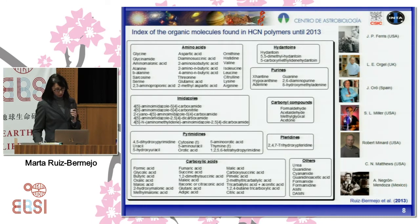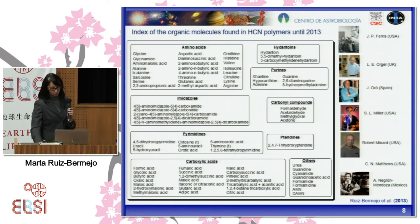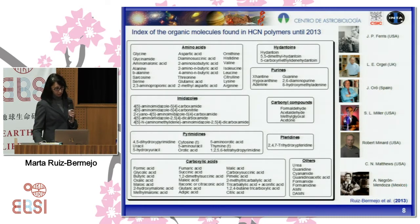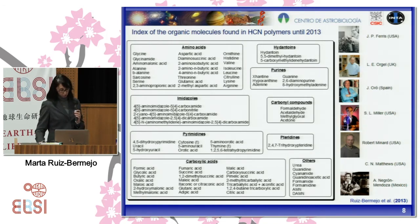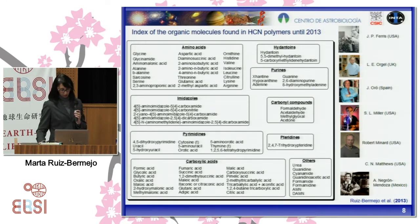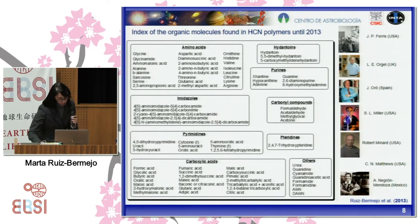Numerous studies over the last 50 years have sought to define the molecules present in hydrogen cyanide polymers. The organics detected depend entirely on the experimental conditions of polymerization — such as reagents, temperature, concentration, and pH — but also on the hydrolysis conditions and analytical techniques used, including GC-MS, HPLC, or other spectroscopic methods. Here we can see a summary of the diverse organics that have been identified in hydrogen cyanide polymers up to 2010, including important bioorganics such as amino acids and nitrogen-containing heterocycles such as hydantoins, purines, imidazoles, and pyridines.